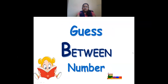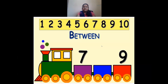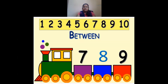Let's guess the between numbers. Here I have 2 and 4 — what comes in between? Counting: 1, 2, 3, 4 — so 3 comes between 2 and 4. Then 7 and 9 — what comes in between? Counting to 9 — what came between 7 and 9, that is after 7 and before 9? That is 8. So 8 comes between 7 and 9.